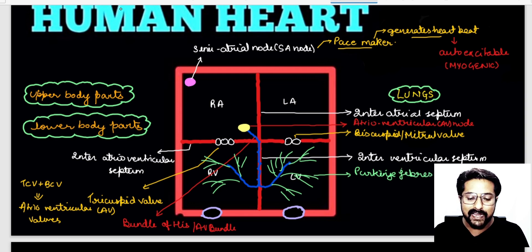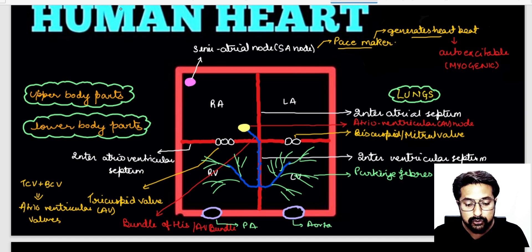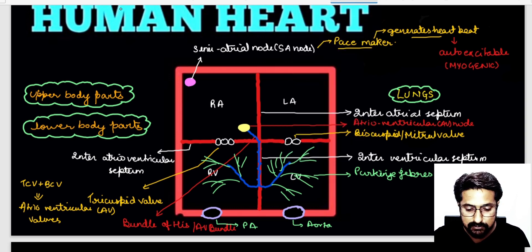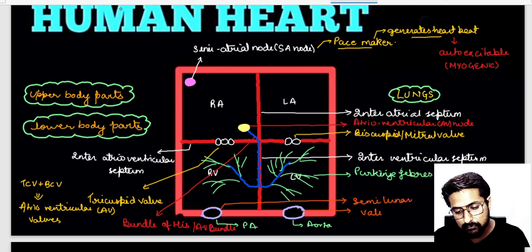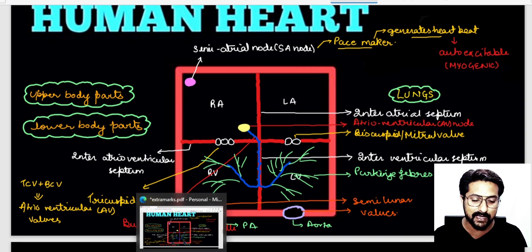The right ventricle opens into the pulmonary artery and the left ventricle opens into the aorta, through valves known as semilunar valves. They are named semilunar valves because they appear half-moon shaped.